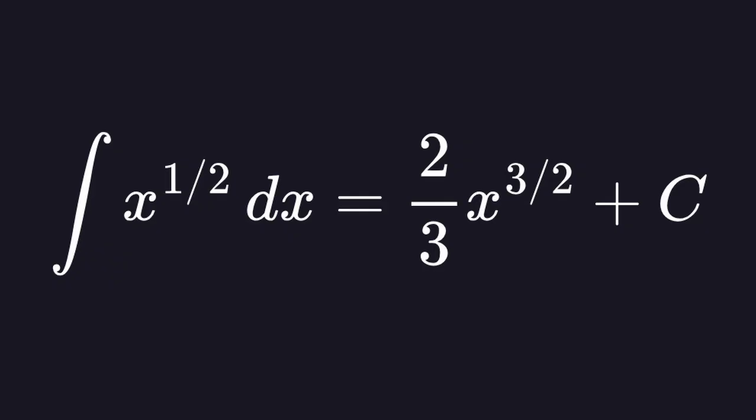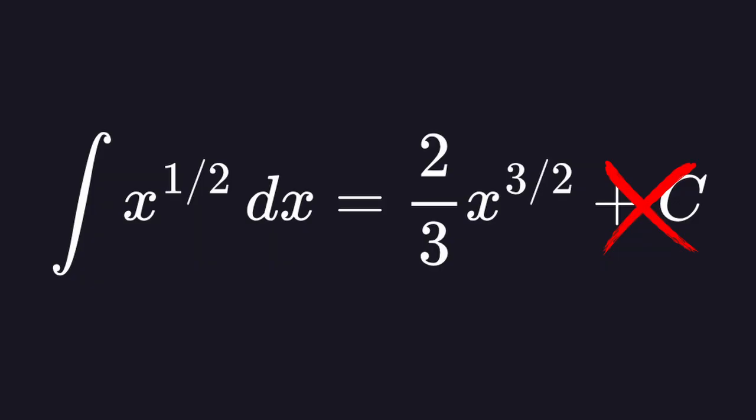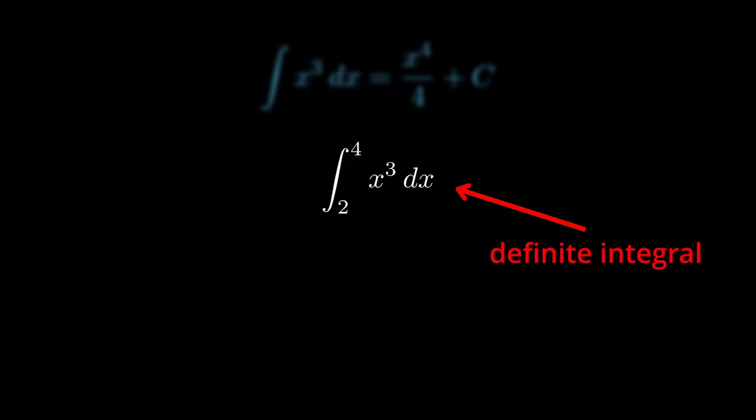Up to now, every integral has ended with plus c, a whole family of curves. But in the exam, you'll often be asked for a single exact number. So here's today's puzzle. How can integration give a definite value with no plus c? Take x cubed, for instance. We know that the integral of x cubed dx is equal to x to the 4 over 4 plus c. Now let's pin that between two x values, say 2 and 4. That right there is a definite integral.